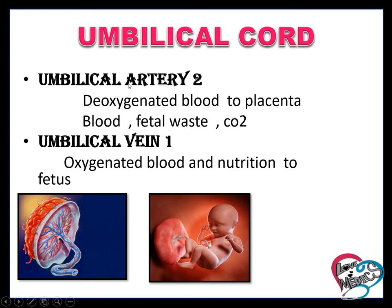Normally the artery carries deoxygenated blood, and the vein carries oxygenated blood. But here the artery carries blood to the placenta — in that blood, fetal waste and carbon dioxide are present. The umbilical vein carries oxygenated blood and nutrition to the fetus. This red color is the umbilical vein and the blue one is the umbilical artery.